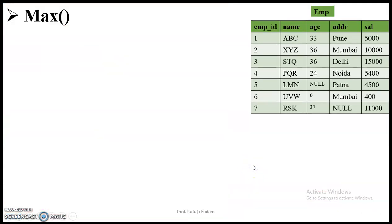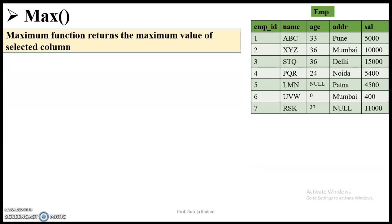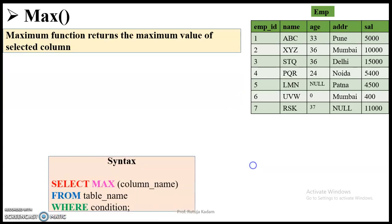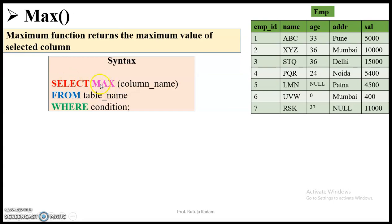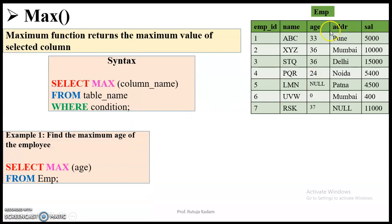Now let us go to the MAX function. This function will return the maximum value of the selected column. The syntax is: SELECT MAX(column_name) FROM table_name WHERE condition. The first example is to return the maximum age of the employee. The query is SELECT MAX(age) FROM employee. We go to the age column — the maximum out of all values is 37. So the output will be 37. Remember, it is returning only a single value.